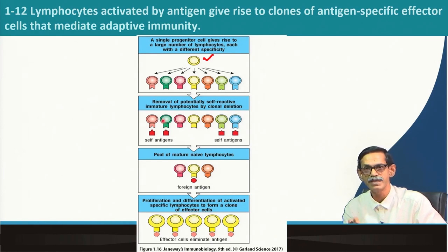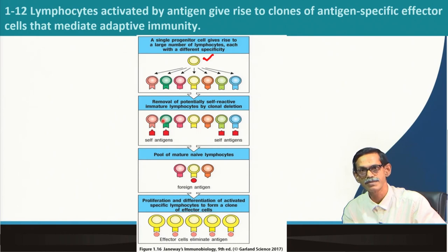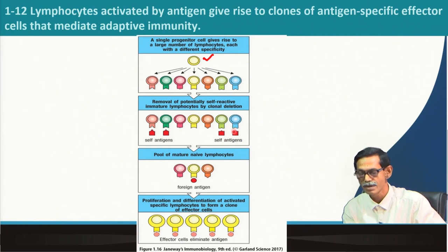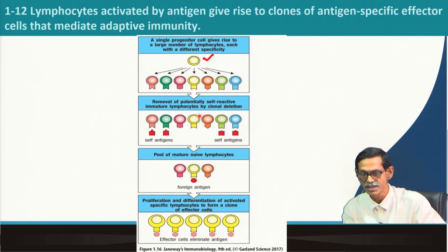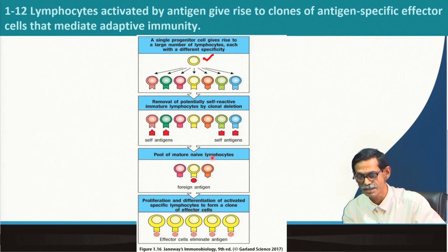Listen carefully: any B cell or T cell that interacts with our own protein or self-antigen during the developmental stage will get the signal to die. In this case, 4 different lymphocytes interacting with self-antigen will get the signal to die. So only 3 will survive — these 3 mature lymphocytes, which have not yet interacted with any antigen, will enter the peripheral blood.